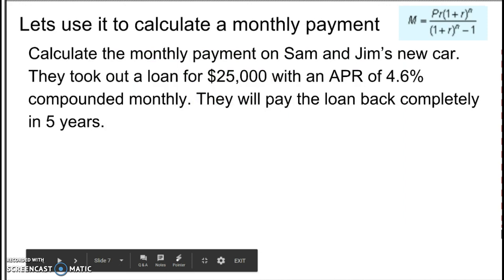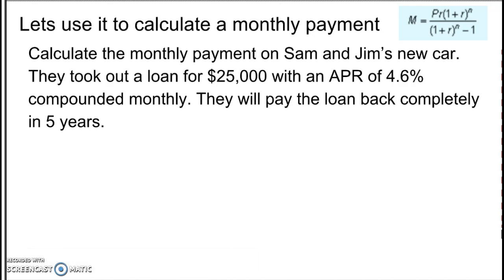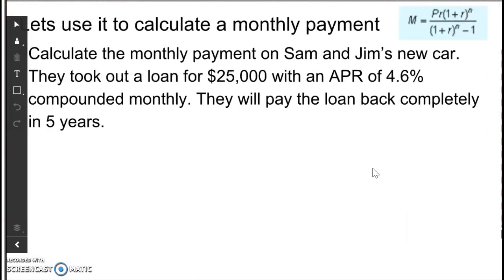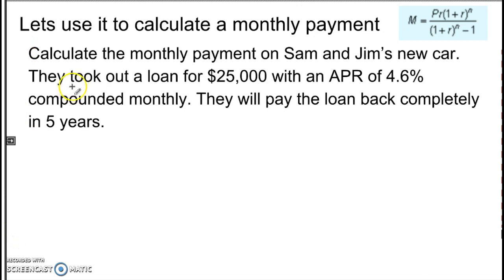And we're going to use it to calculate a monthly payment here. So let me flip it over so I can draw on my screen. Alright. So we're going to calculate the payment on Sam and Jim's new car. They are taking out a loan for $25,000 with an APR of 4.6% compounded monthly. They will pay the loan back completely in five years. Alright, so let's look at our formula here.